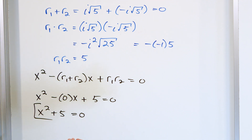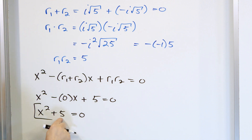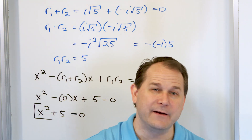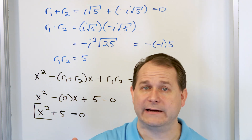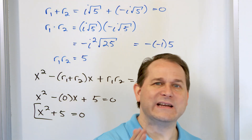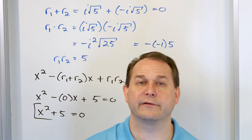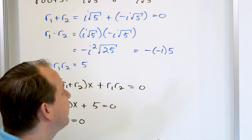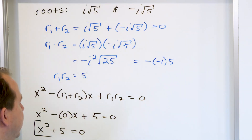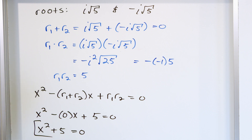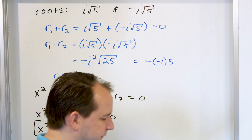Does this make sense? If I were to find the roots of x squared plus 5 equals 0, I'd move the five to the other side to get negative five, then take the square root of both sides. The square root of negative five gives plus or minus i times the square root of 5, which is exactly what we started with. So it makes sense that this is the quadratic. You can't always check so easily, but this one's simple enough to verify.